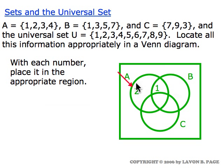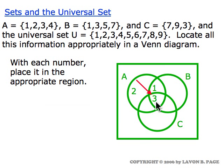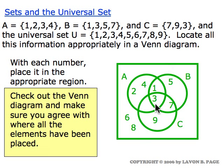The number two has to go in this region because two belongs to A but does not belong to B or C, so two has to be inside the A circle and outside the B and C circles. Three belongs to A, B, and C, so it goes in the center part of the picture. If you fill in the rest of the numbers, you should get what's shown here. For example, the number eight lies in the outer area because eight does not belong to any of the sets A, B, or C, so it has to lie outside of all three circles. Five lies in B but does not lie in A or C, so it goes in that portion of the picture.